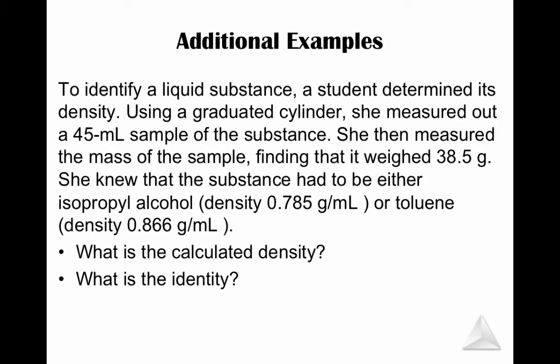So using density, since we were just talking about it, here is an additional example. To identify a liquid substance, the student determined its density. Using a graduated cylinder, she measured out a 45 milliliter sample of the substance. She then measured the mass of the sample, finding that it weighed 38.5 grams. She knew that the substance had to either be isopropyl alcohol or toluene. What is the calculated density and what is the identity? So see if you can work through this problem, pause it, and then continue once you get the answer.